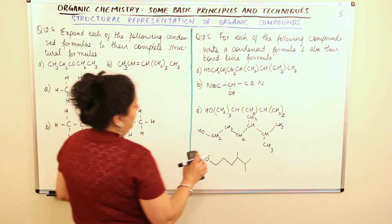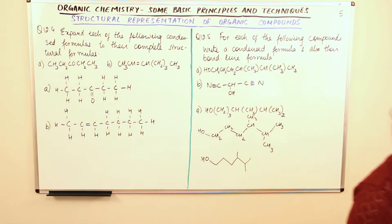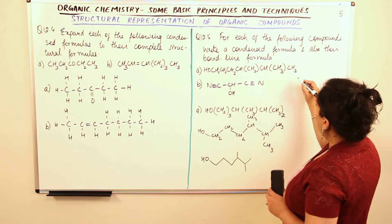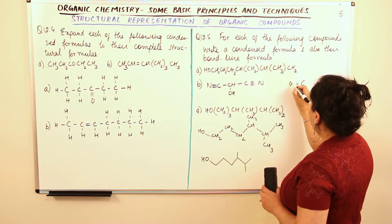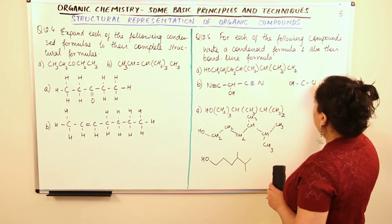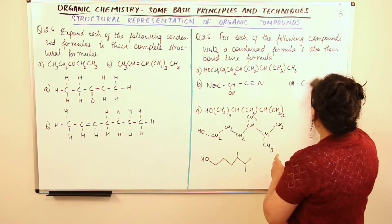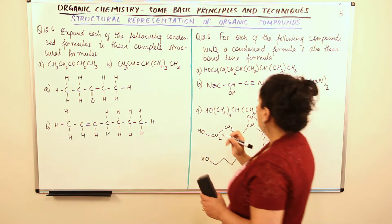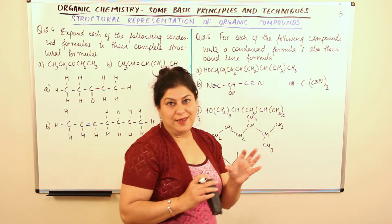The next compound is NC — that is, there are two cyano groups. You have CH with OH and C triple bond N. You're supposed to write down the condensed formula for this. To this CH, which is the central carbon, you have OH attached and you have C≡N twice. So you can write it as C(OH)(C≡N)2. So this is the condensed formula.